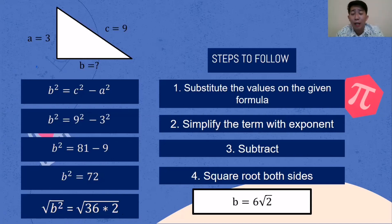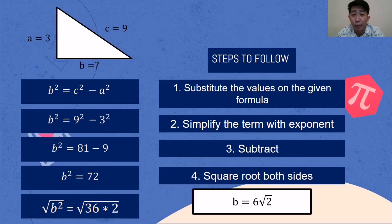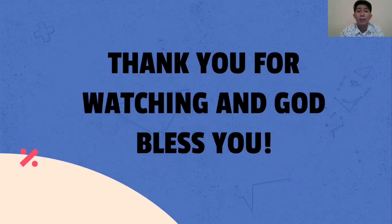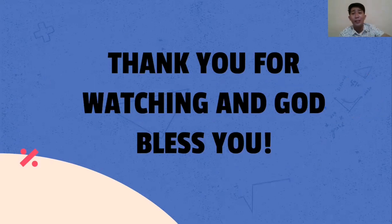That is very simple to follow. To find C, use C squared equals A squared plus B squared. To find side A, use A squared equals C squared minus B squared. To find side B, use B squared equals C squared minus A squared. Always remember to be excellent at what is good and be innocent of evil. This is Sir DN. Thank you for watching, God bless you. Please keep on subscribing to my YouTube channel. Have a nice day!